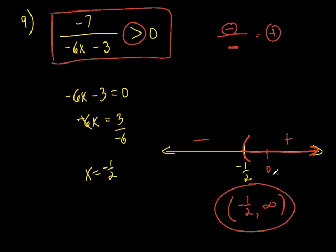This stuff seemed pretty crazy when we first went over it — the number line stuff, all the brackets and parentheses and infinities. But hopefully after doing this for a while, it's starting to make a little more sense. Let me know if any of this isn't clicking with you. Maybe some of you got it right away, maybe some of you are still lost. If that's your situation, you've got to come to me and ask for some extra help, because I can only do so much in class. This is on YouTube, so you can go back and watch it.